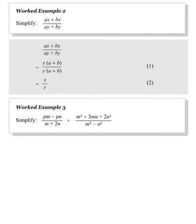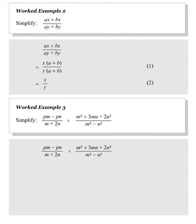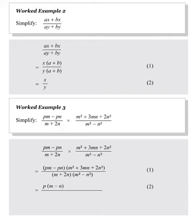In worked example 3, we have to multiply two fractions. This means that we multiply the two numerators and multiply the two denominators as in step 1. In step 2, we factorise each part of the numerator and each part of the denominator.